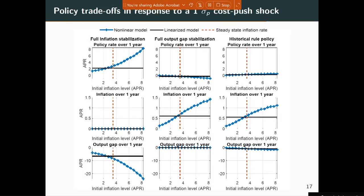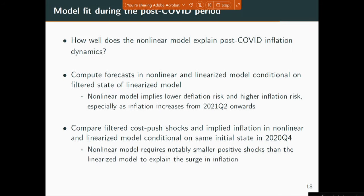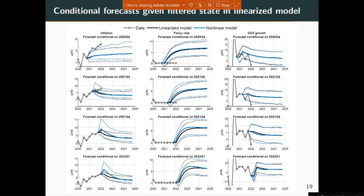My time is up, so I'll skip the remaining slides. These slides provide an assessment of how the model fits the post-COVID data, done in two steps: computing forecasts, which show that the nonlinear model becomes increasingly better at forecasting inflation as it keeps going up. More importantly, the nonlinear model very early on — as early as mid-2021 — offers a view that there's a risk inflation may get out of hand quickly. The forecast bands are much wider in the nonlinear model, signaling much earlier than the linearized model that there is a danger inflation may get out of hand.